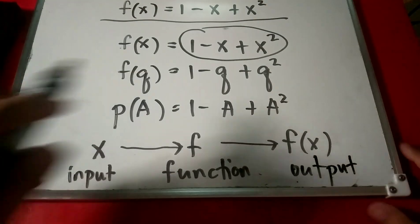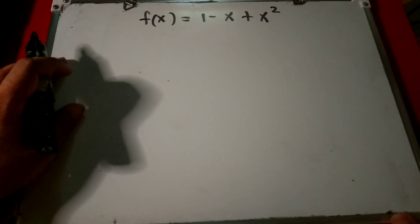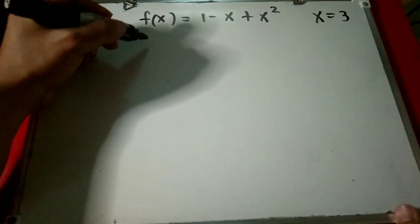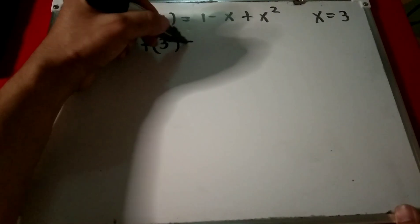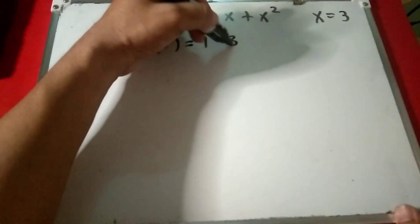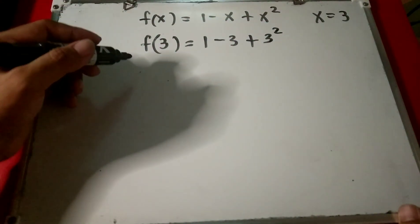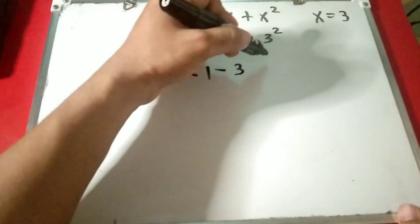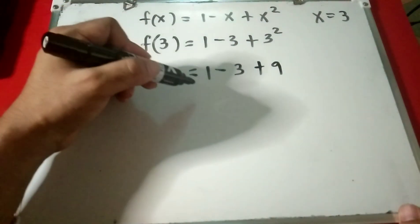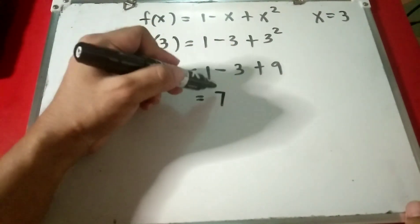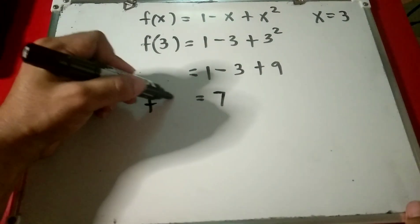Given the function f of x equals 1 minus x plus x squared, let us evaluate for x equals 3. Replace x with 3: we get 1 minus 3 plus 3 squared, which is 1 minus 3 plus 9. That gives us negative 2 plus 9, so f of 3 equals 7.